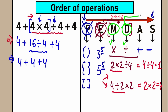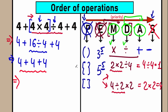The next and last step is A and S — addition and subtraction. We only have addition signs here, so we can skip subtraction. At this point, 99% of students don't need the order of operation anymore because we just have basic addition. So: 4 plus 4 plus 4. Four plus 4 equals 8 from left to right, and plus 4 equals 12.